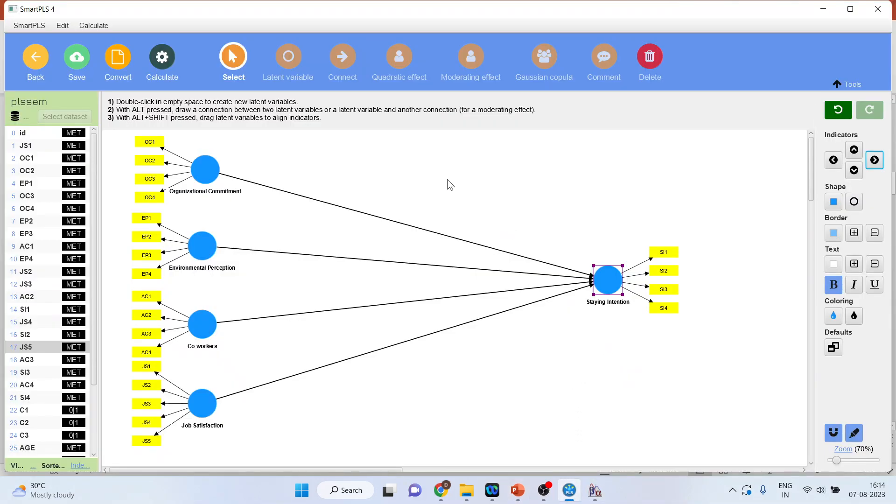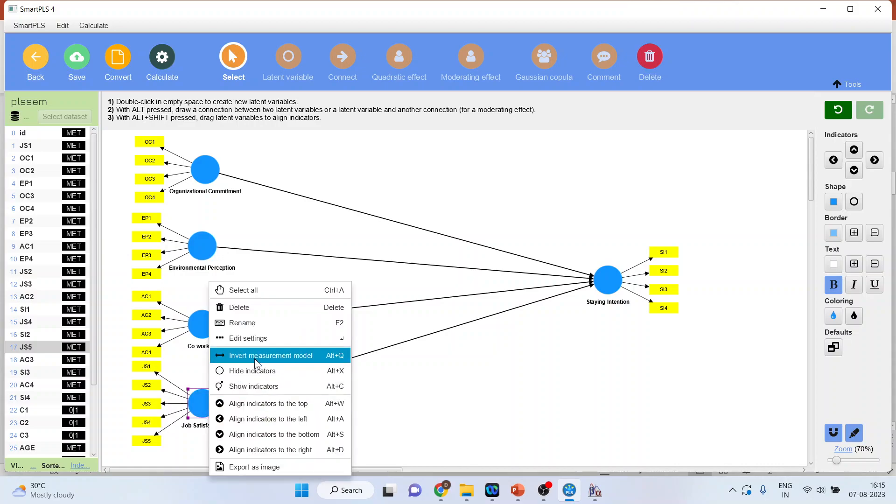In your model, you will have to identify where the formative constructs are there. How we will identify? See, in this case, the arrows are moving out of the construct and therefore it is a reflective construct. In this case, the arrows are moving out and therefore it is a reflective construct.